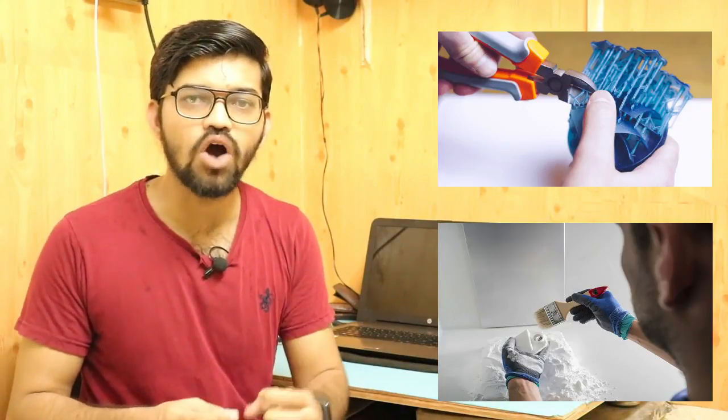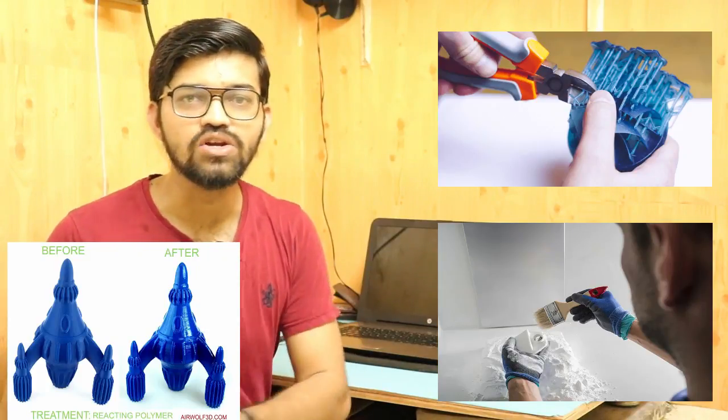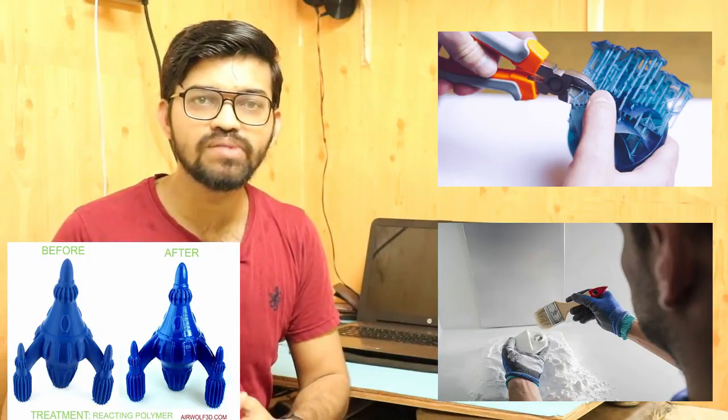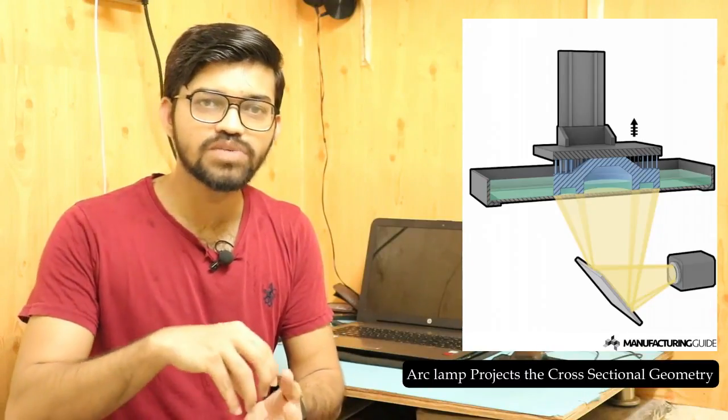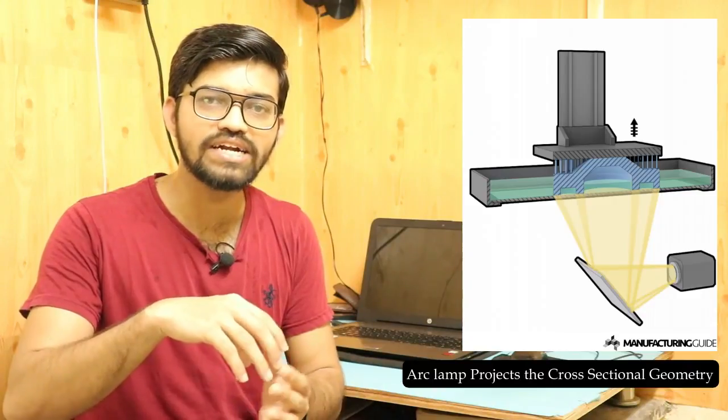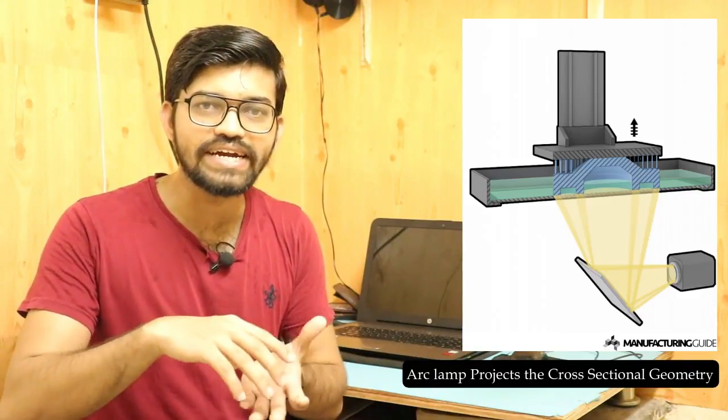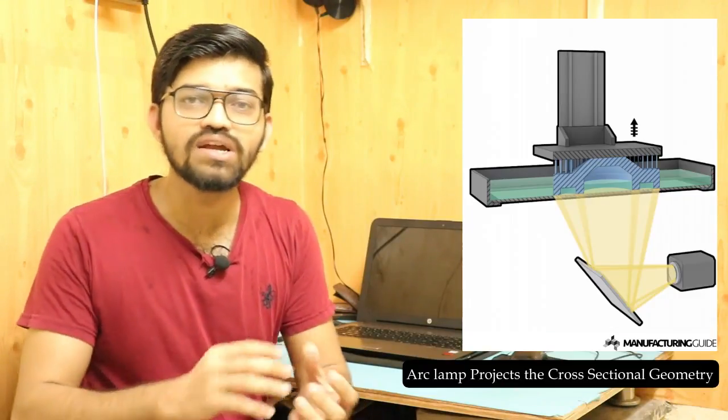After a part is 3D printed, further post-processing is required: removing the extra plastic material that acted as support during curing, and applying primer coating and painting. These finishing operations improve the surface finish and aesthetic appearance of the printed object. In summary, the arc lamp projects cross-sections of the object; these cross-sections produce successive layers, and the complete 3D model is extruded from the liquid polymer resin.